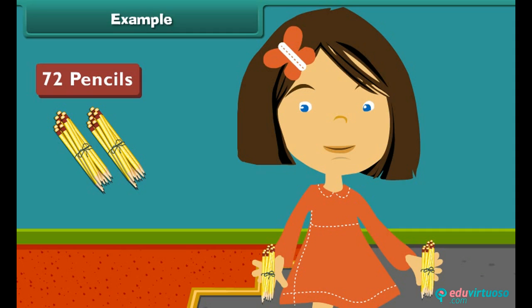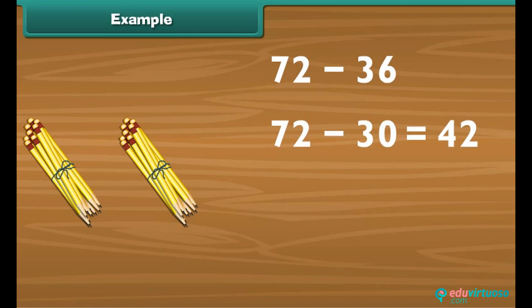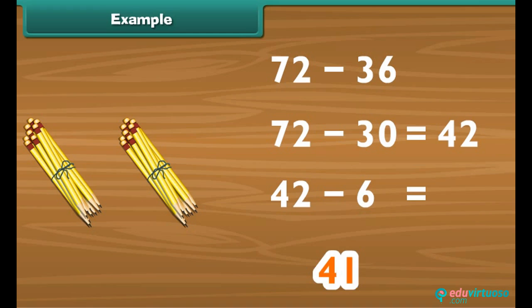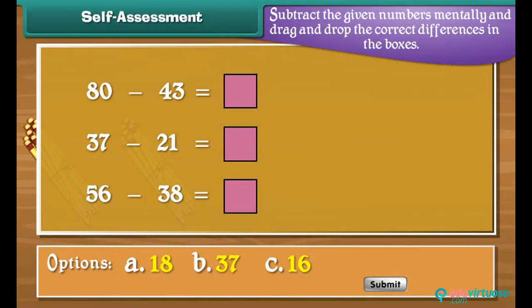Example: Reena's father bought her 72 pencils and she used 36. How many are left? We subtract 36 from 72. First subtract 30 from 72 — the answer is 42. Now subtract 6 from 42 using reverse counting: 41, 40, 39, 38, 37, 36. So 36 is the answer.